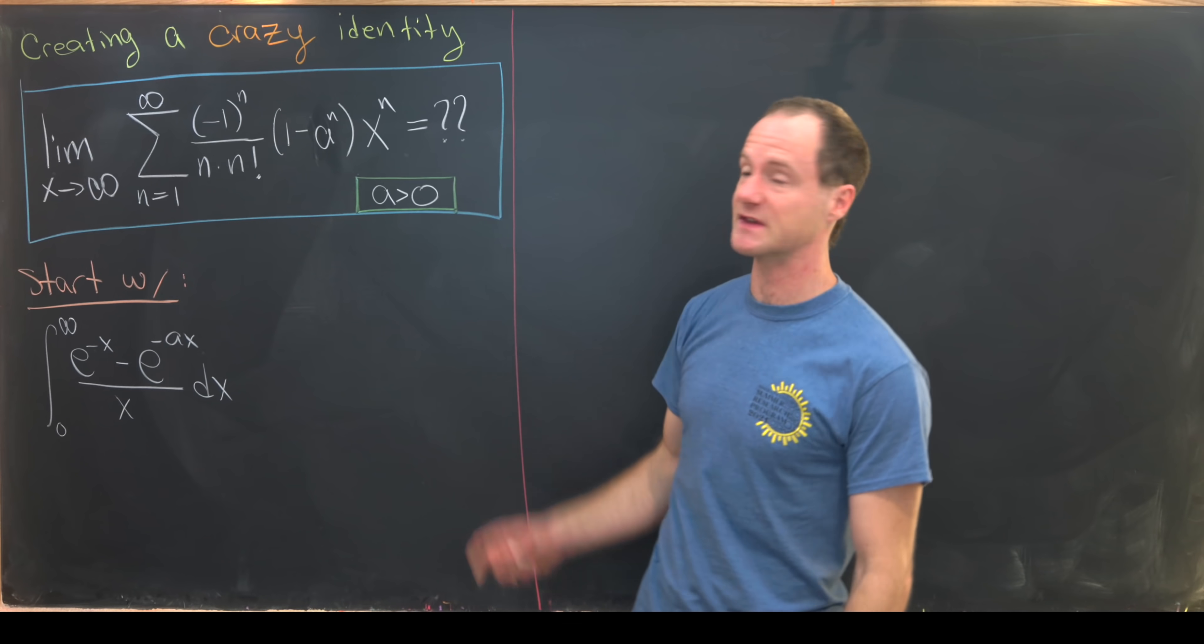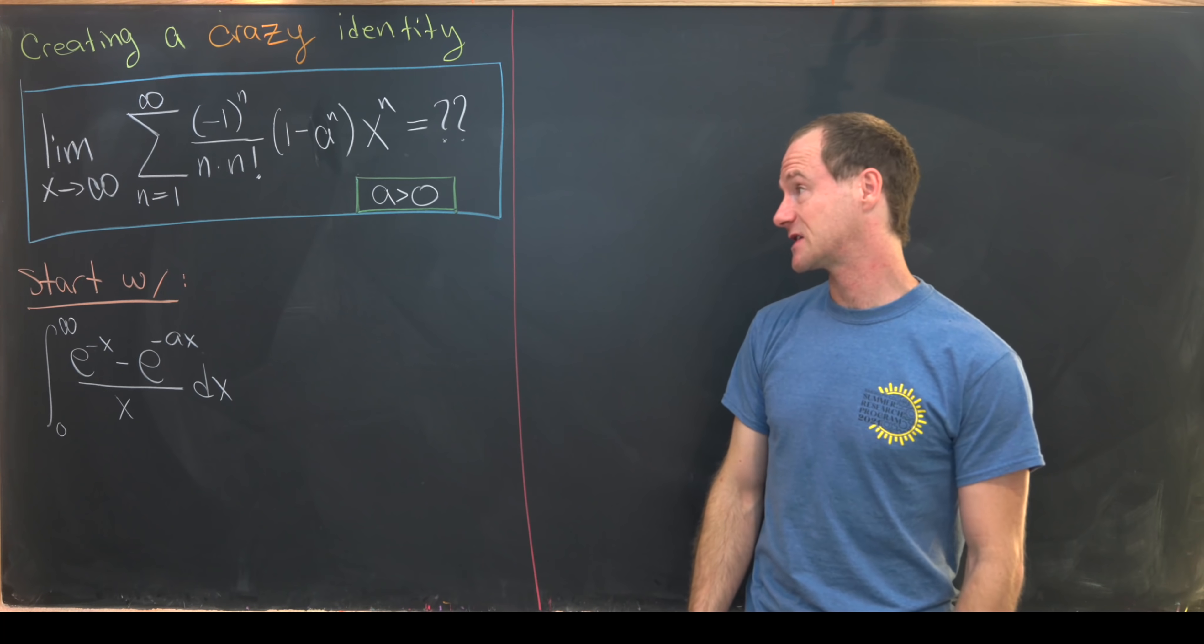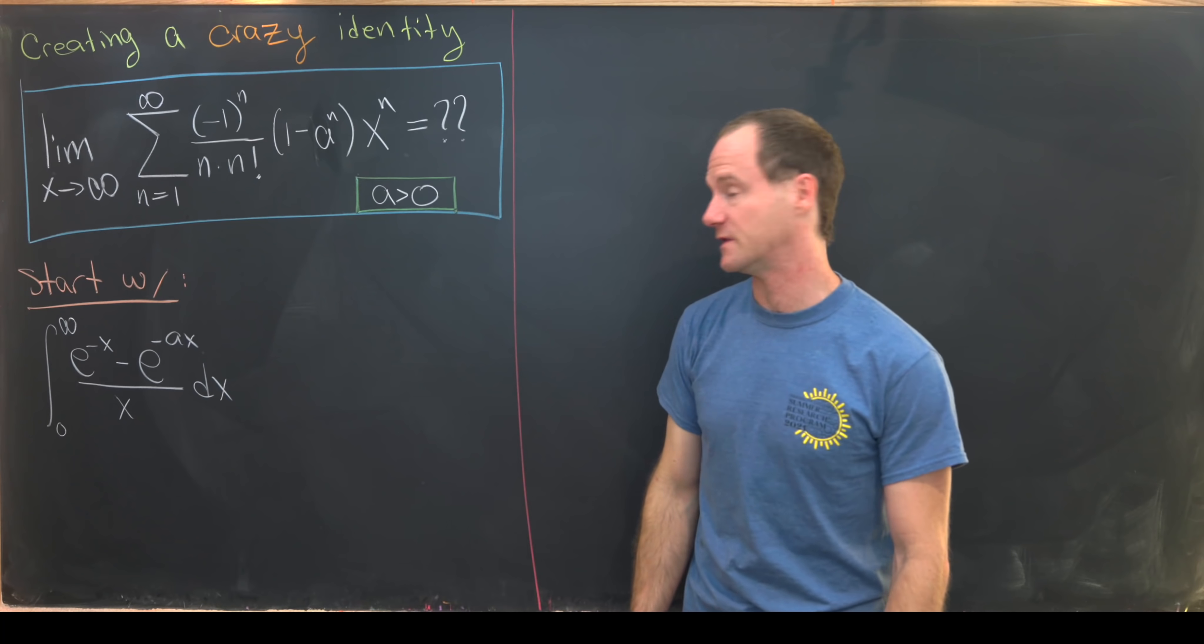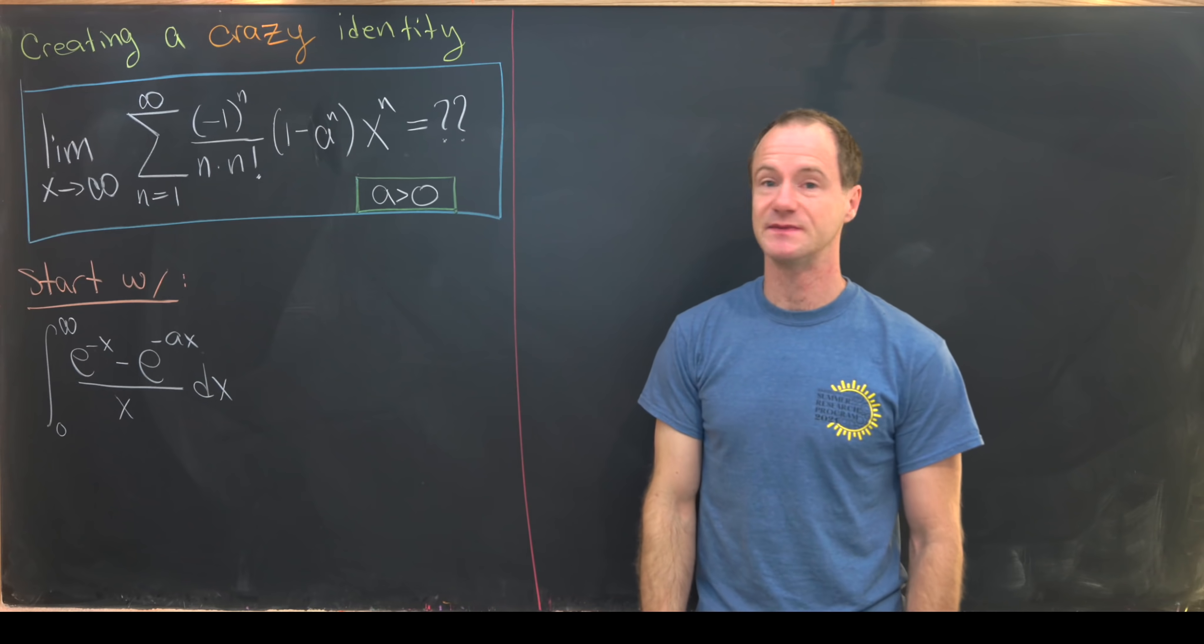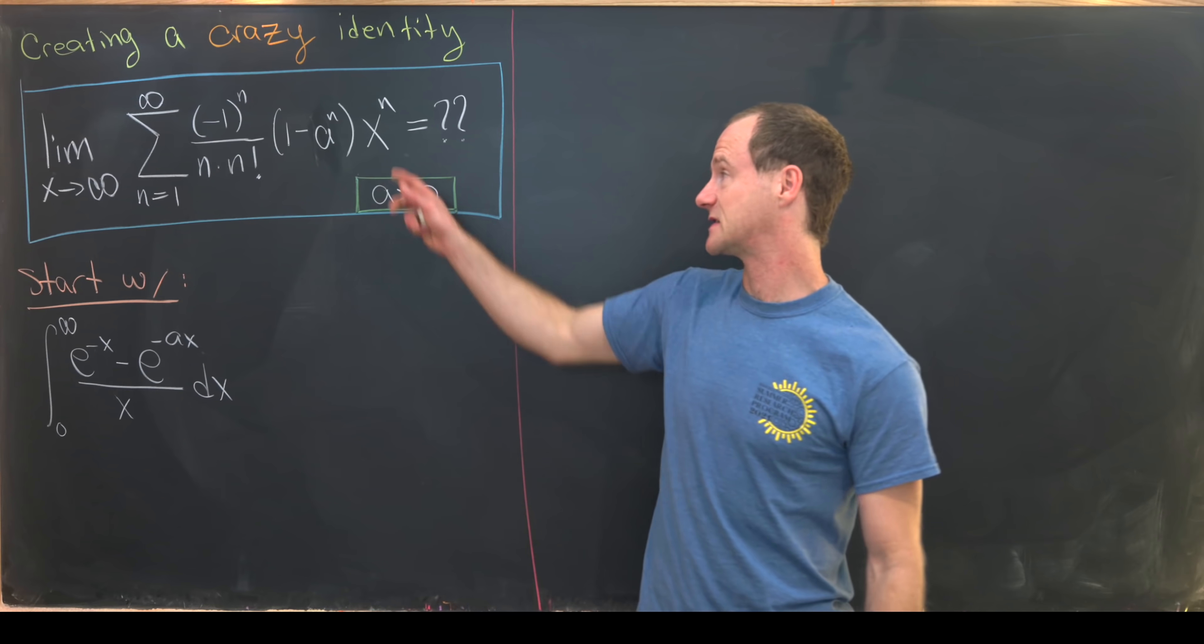Obviously we'll get to what this question mark is towards the end of the video. We've got the limit as x goes to infinity of the sum as n goes from 1 to infinity of minus 1 to the n over n times n factorial times 1 minus a to the n x to the n.